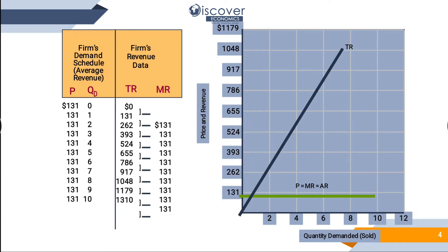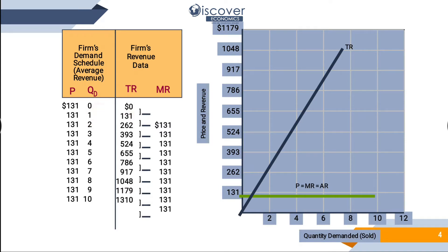You divide by the change in quantities. Second quantity minus first quantity: 2 minus 1 equals 1. So 131 divided by 1 equals 131.